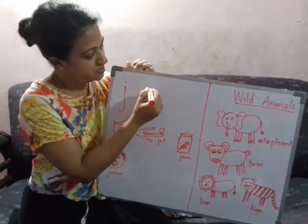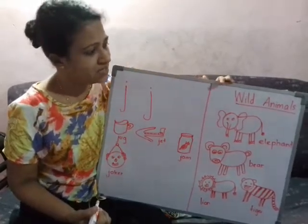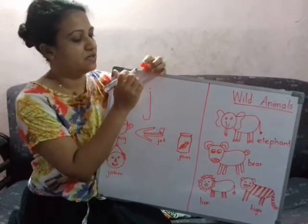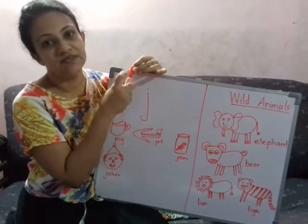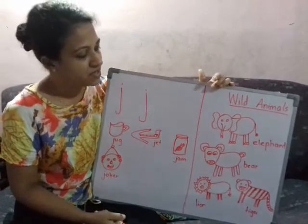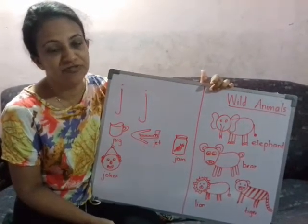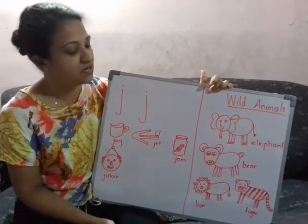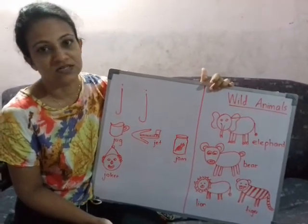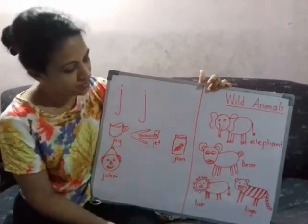The other lesson is wild animals. Wild animals means they live in the jungle. We can't catch them. They live alone. We don't give food for them — they find their own food. They live alone, not with us, in the jungle.